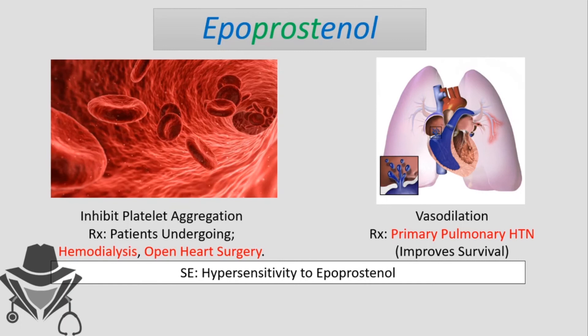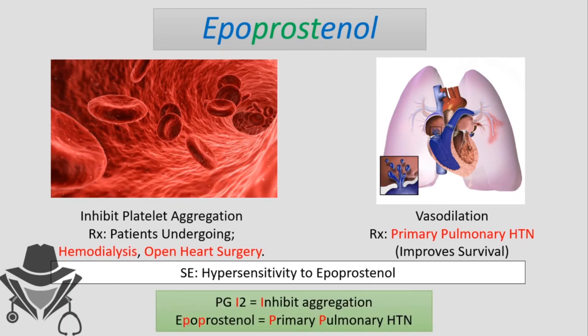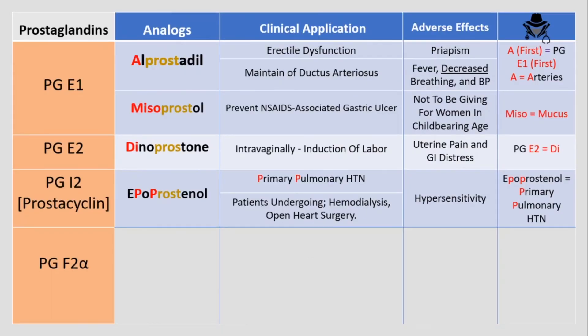For the mnemonic: iloprostanol is a prostaglandin I2 analogue — I2 inhibits aggregation. Iloprostanol also has two P's in its name, reminding us it treats primary pulmonary hypertension, which also has two P's. We've now finished the good prostaglandins: E1, E2, and I2 with their analogues.